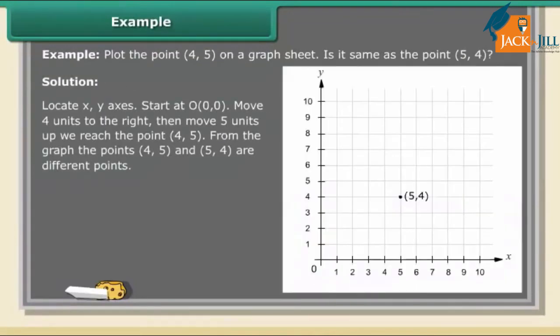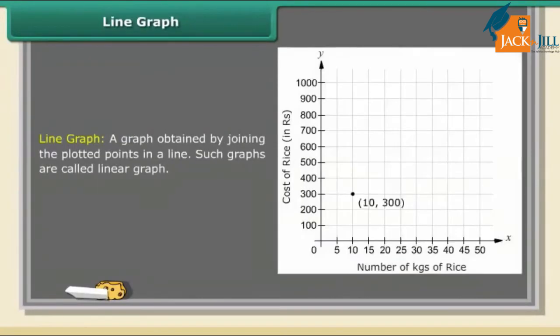Solution: Locate x-y axes. Start at O(0,0). Move 4 units to the right, then move 5 units up. We reach the point (4,5). From the graph, the points (4,5) and (5,4) are different points. A line graph: A graph obtained by joining the plotted points in a line. Such graphs are called linear graphs.